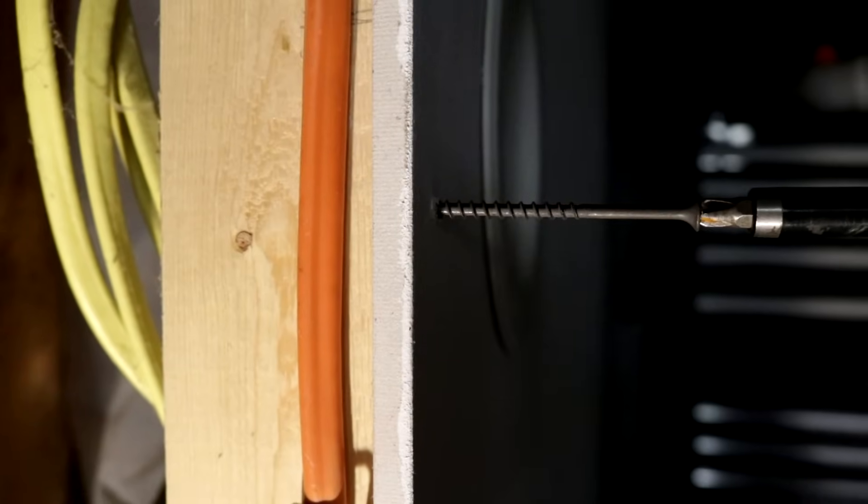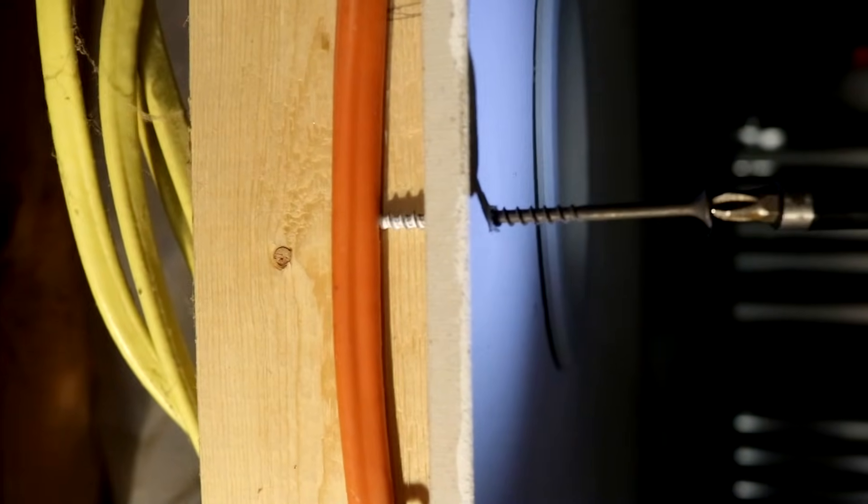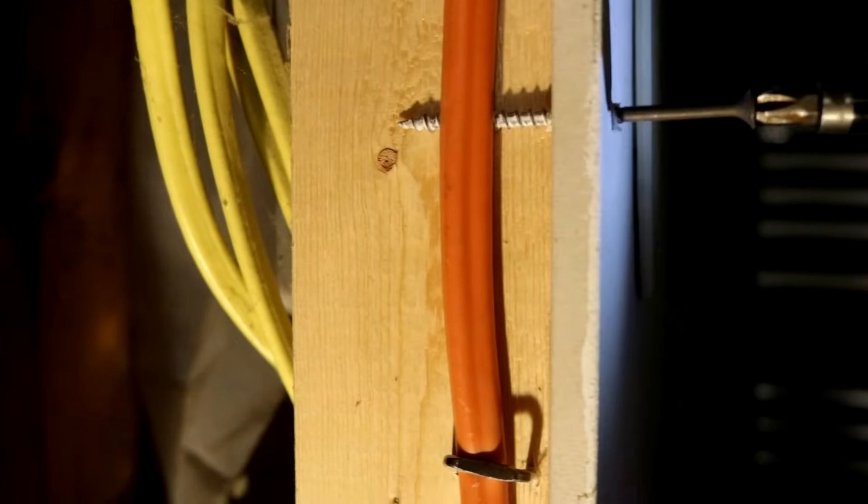The number two most common reason is let's say you're hanging a picture on the wall and you run a screw through your drywall and you hit an electrical wire that was behind it. So you'd have a short in the wiring and that will cause your breaker to trip.